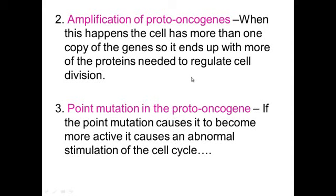You can also have amplification of proto-oncogenes. When this happens, you have a duplication of genes in the chromosome, so you have more than one copy of the proto-oncogene. When it gets turned on, you get more copies of the final product — the transcription factors — than what you needed to begin with. With too much of it, you have too much cell division, and then the cell is cancerous.